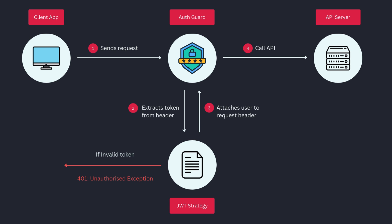When a request comes in, it first passes through the guard before proceeding to the route handler. First, it extracts the auth token from the header. Then it validates the token using the defined strategy — in our case, JWT strategy. If the token is valid, it attaches the user, fetched from the payload, to the request. Otherwise it throws an unauthorized exception.